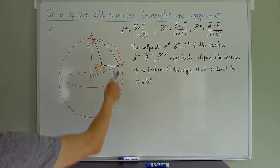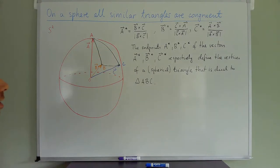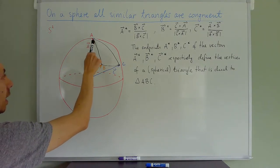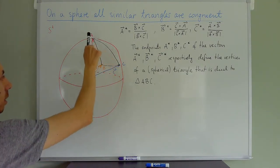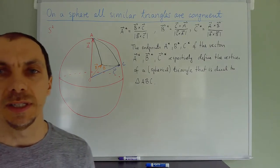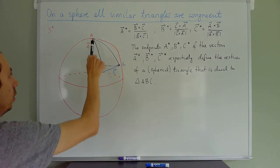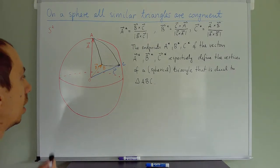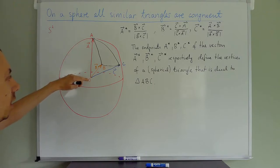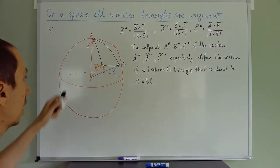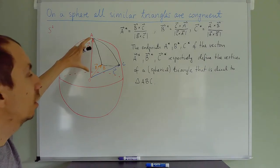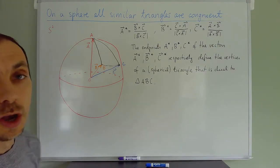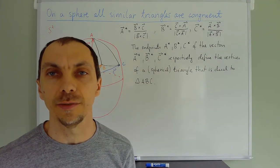So the red sphere is, as always for us, a unit sphere. And I draw on that sphere a spherical triangle — namely this black triangle ABC. You have its vertices A, B, and C. Just as before, we join each of the vertices with the center of the sphere, and that gives us vectors. They are unit length vectors whose origin is always the center and whose endpoints are the vertices of the black spherical triangle.